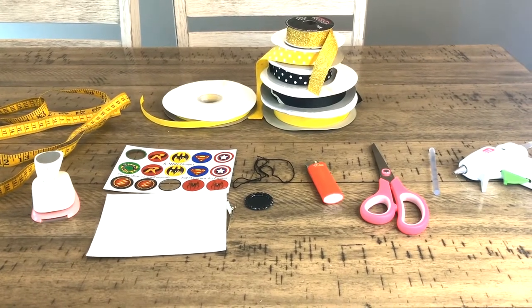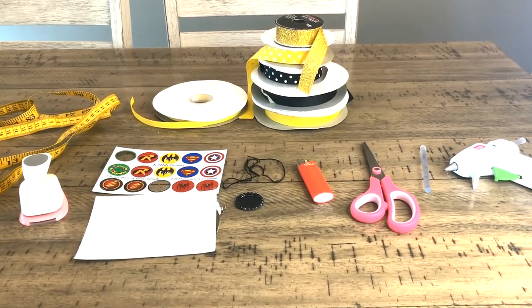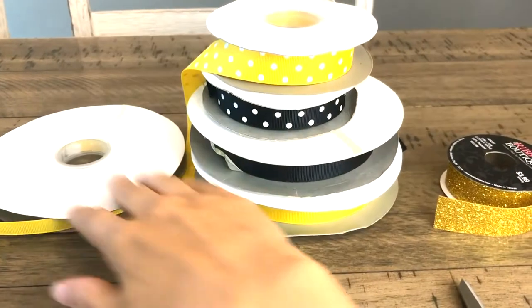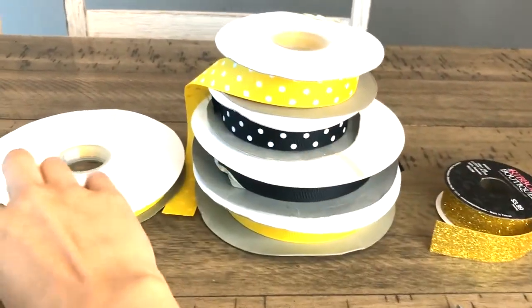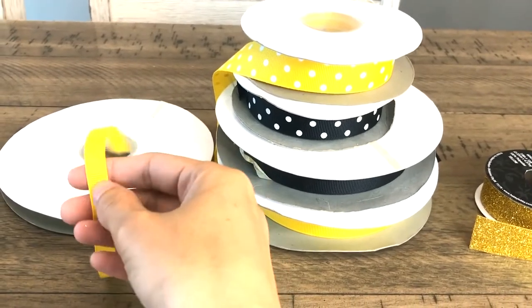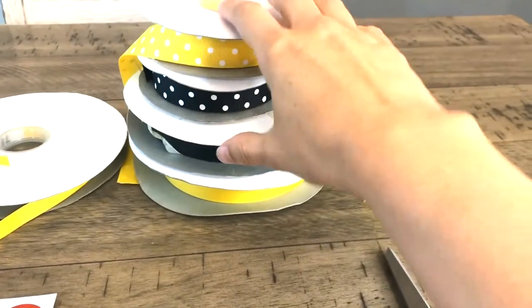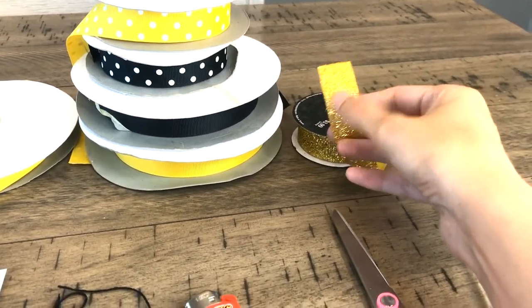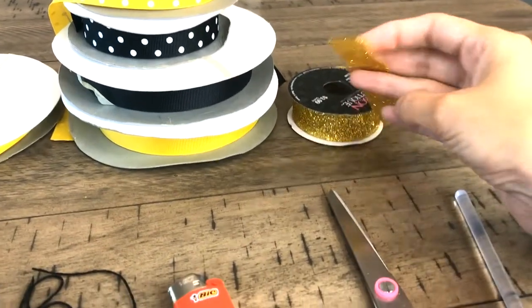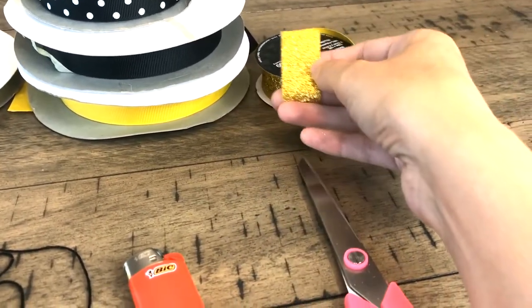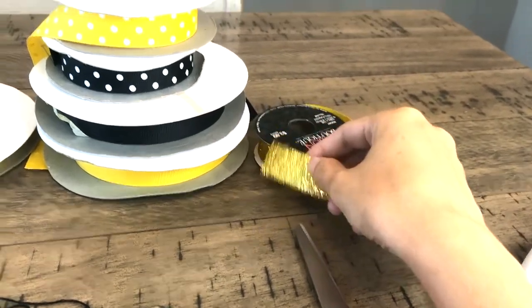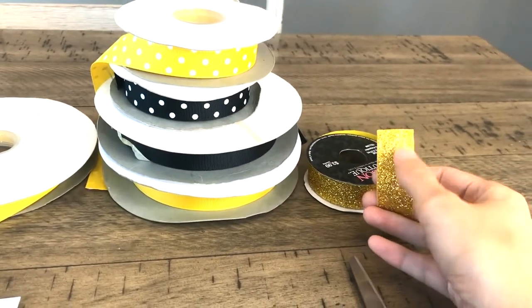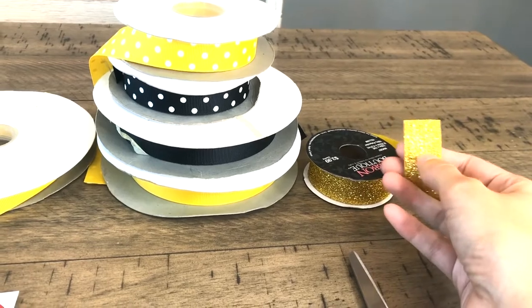Here is a look at all the supplies that I will need to make my boutique hair bow. So starting with the ribbon, this is all grosgrain ribbon. I've got three-eighths, these ones are all seven-eighths, and this sparkly shimmery one is not grosgrain. It's not mandatory, you can make a beautiful bow just using grosgrain ribbon, but I wanted to have a little bit of extra sparkle on my bow.